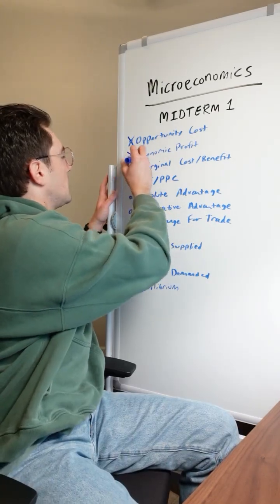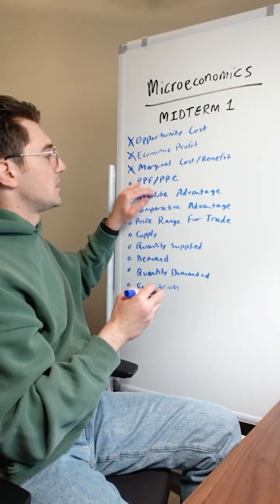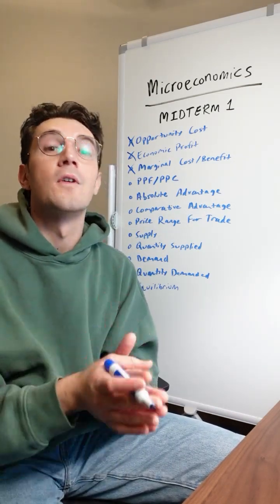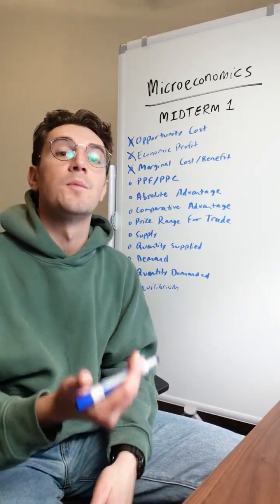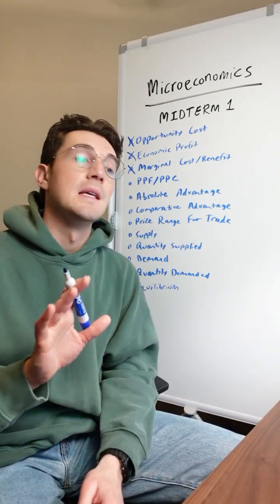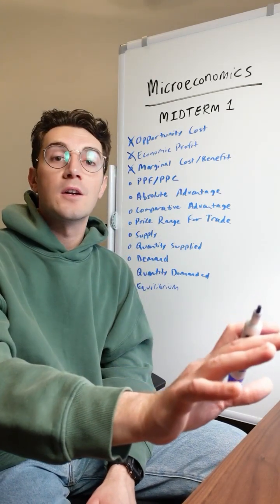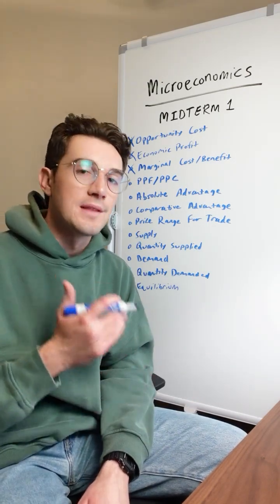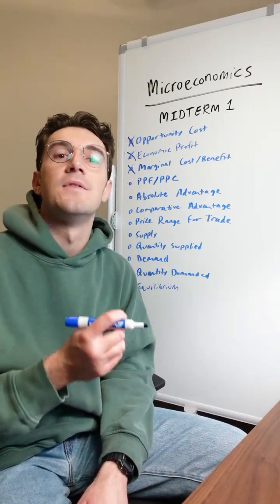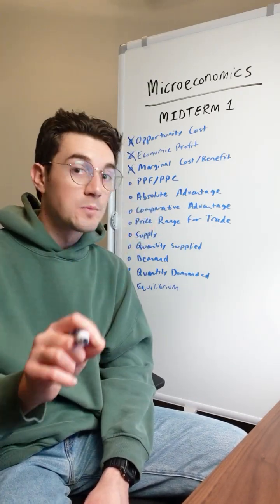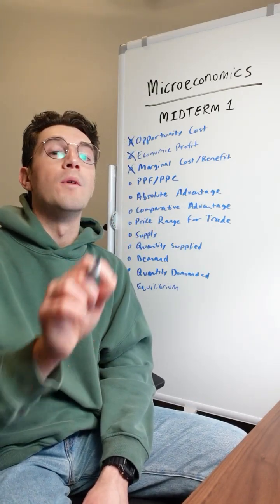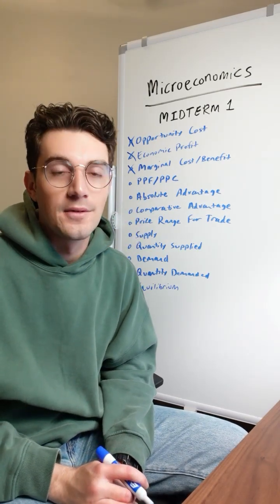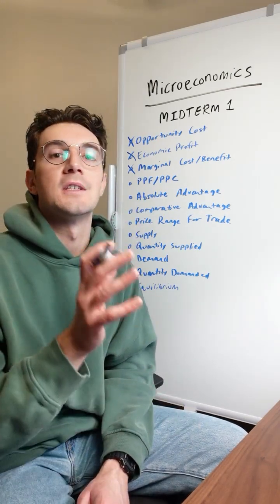Next up: PPF or PPC curves. The curve itself represents your frontier for production. Anything beyond that curve is impossible to attain, and any point within it is inefficient. A country's production should always rest along its PPF — that is efficient output.